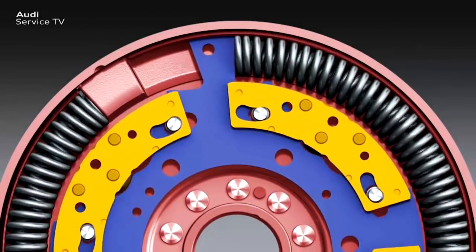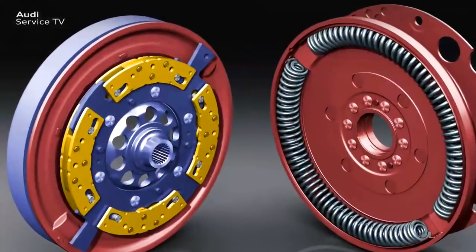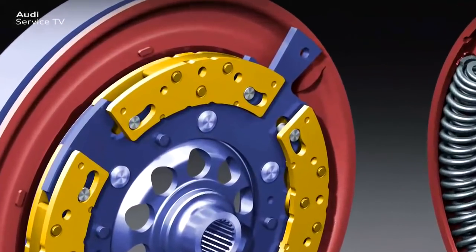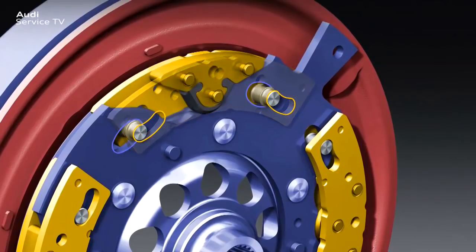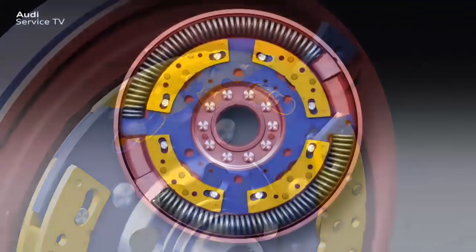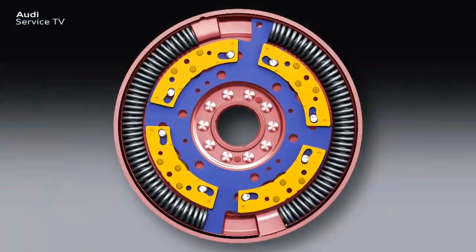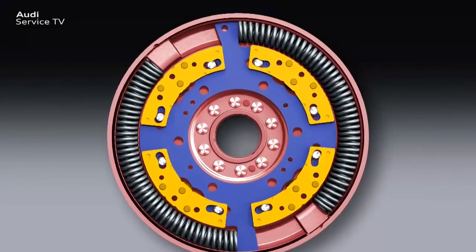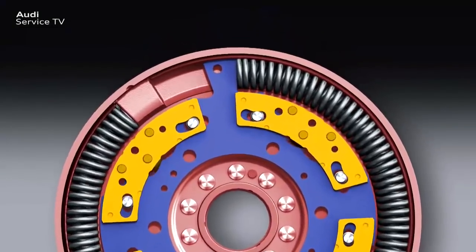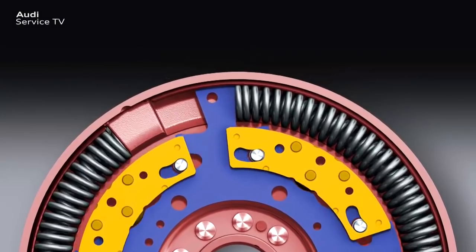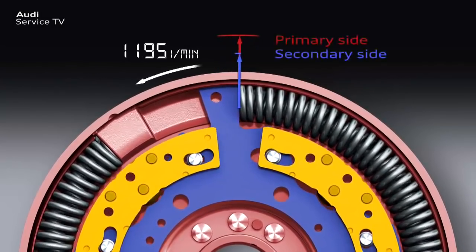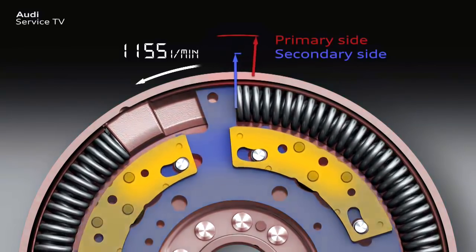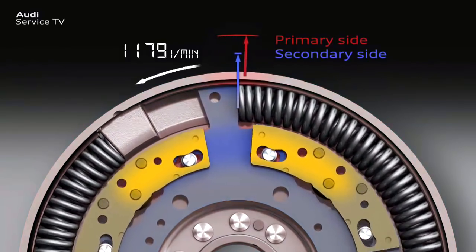The weight of the pendulum masses and the curved radius of the bearing track are precisely coordinated to the torsional vibrational behavior of the engine, so that they oscillate contrary to the torsional vibrations of the engine. With this opposing effect of the pendulum force, the disturbing torsional vibrations of the engine are reduced very effectively upstream of the gearbox. At low engine speeds, when the disturbing torsional vibrations are particularly high, the pendulum swings are correspondingly large and work effectively against the torsional vibrations of the engine.